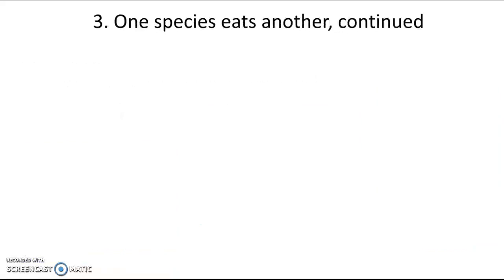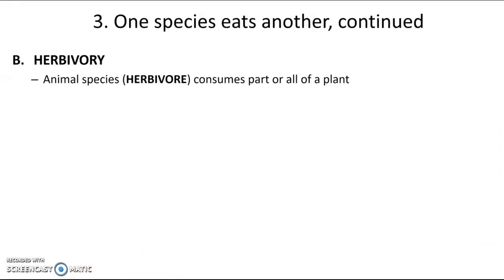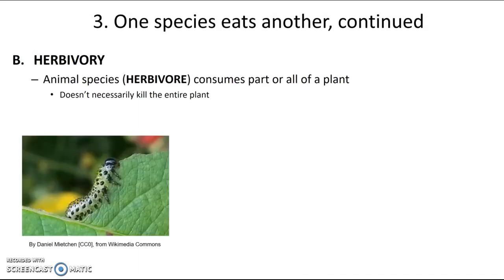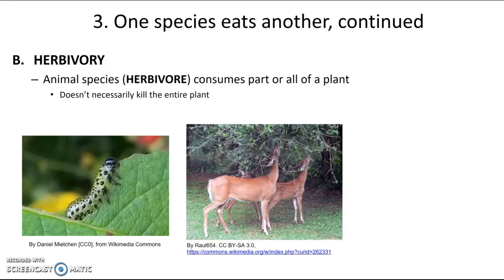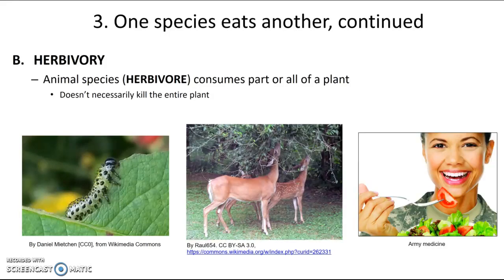The other main type of interaction in which one species eats another is herbivory — when an animal species, an herbivore, consumes part or all of a plant. Unlike most predation, it doesn't necessarily kill the entire plant; it might just take part of it and the rest can keep growing. Examples include a caterpillar eating leaves, deer eating trees and shrubs, and even humans eating salad. This is classified as plus-minus because it's good for the herbivore getting food, but not good for the plant, which can be damaged or killed.